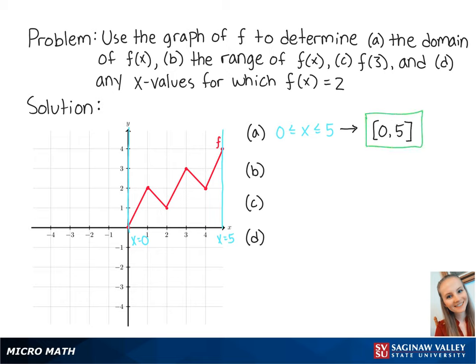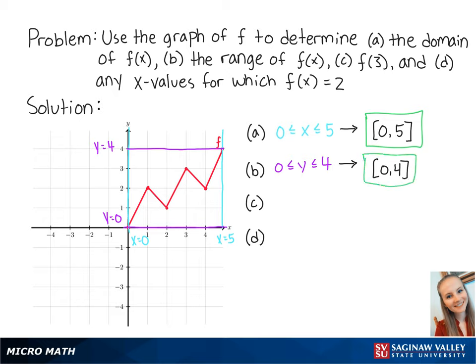For letter b, the range of f of x is the set of all y values within the function. Looking at the graph, we can see that the smallest value of y is 0 and the highest value of y is 4, meaning y is between 0 and 4. Since the range is inclusive on both endpoints, we can write this as [0, 4] with brackets on both endpoints.